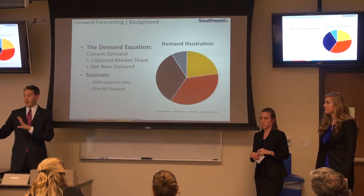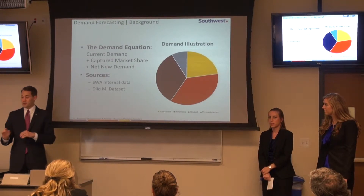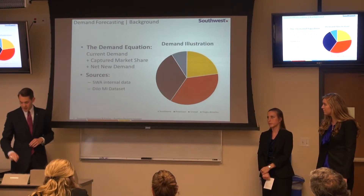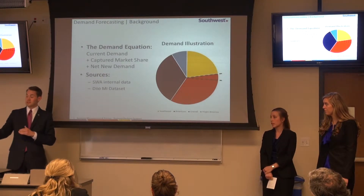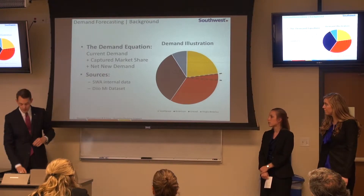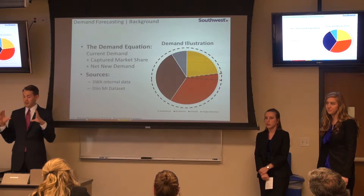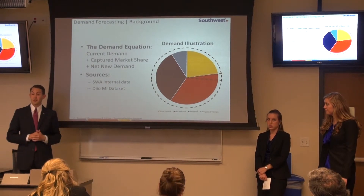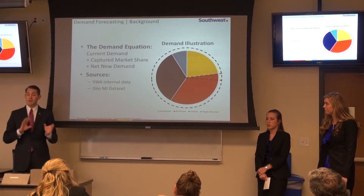We illustrated this with a pie chart. Current demand is fairly intuitive — it's how much market share Southwest has within a current market, like the yellow slice for Dallas to Albuquerque. Captured market share looks at how much Southwest could potentially take from a competitor, such as from American Airlines. Net new demand represents overall market growth — if Southwest enters a brand new market or adds more flights, can we expect some organic growth? Our data sources were the Southwest internal data set and the DOME data set, which includes FAA and other federally mandated data on demand and traffic.